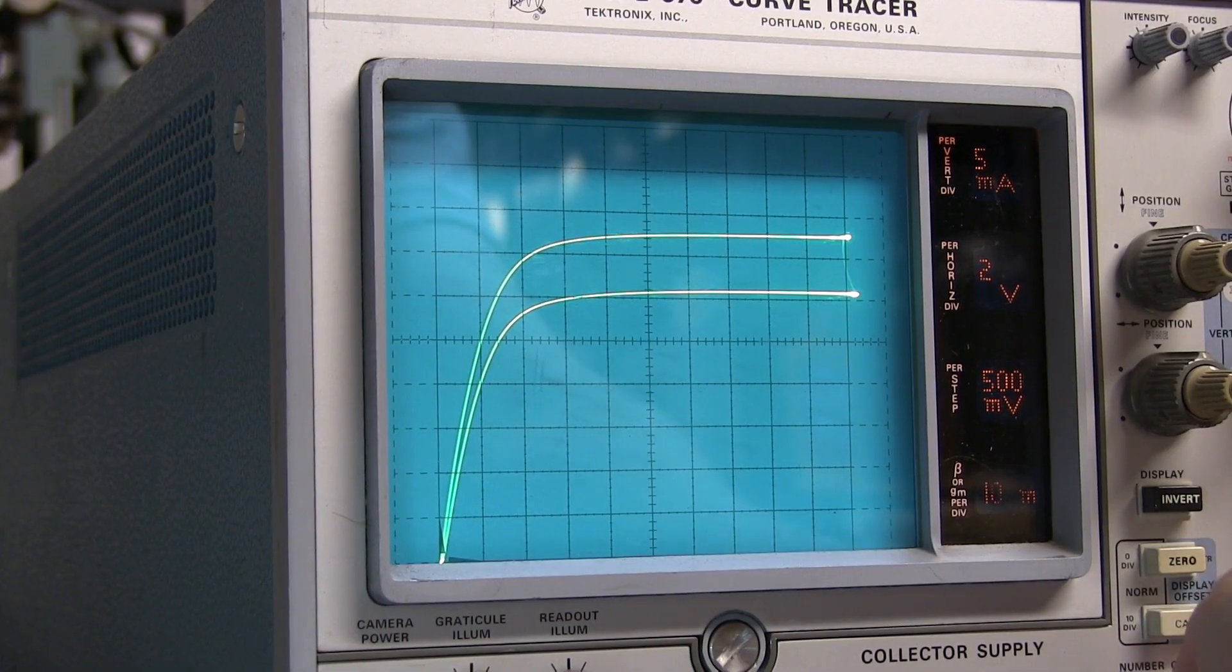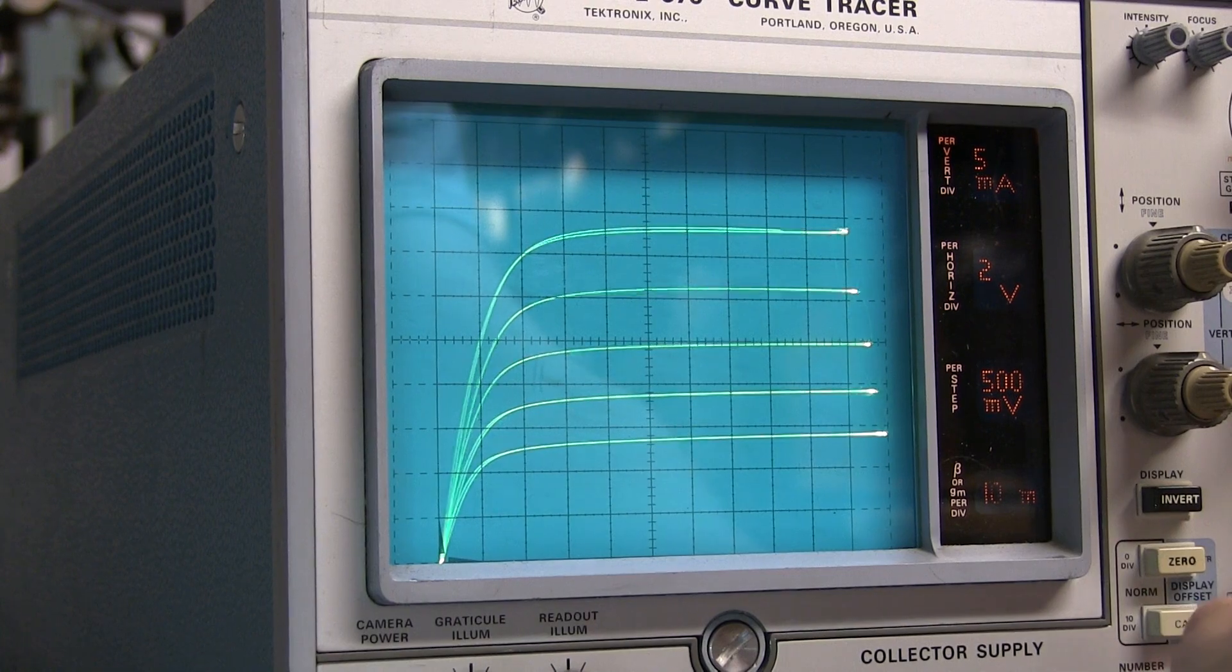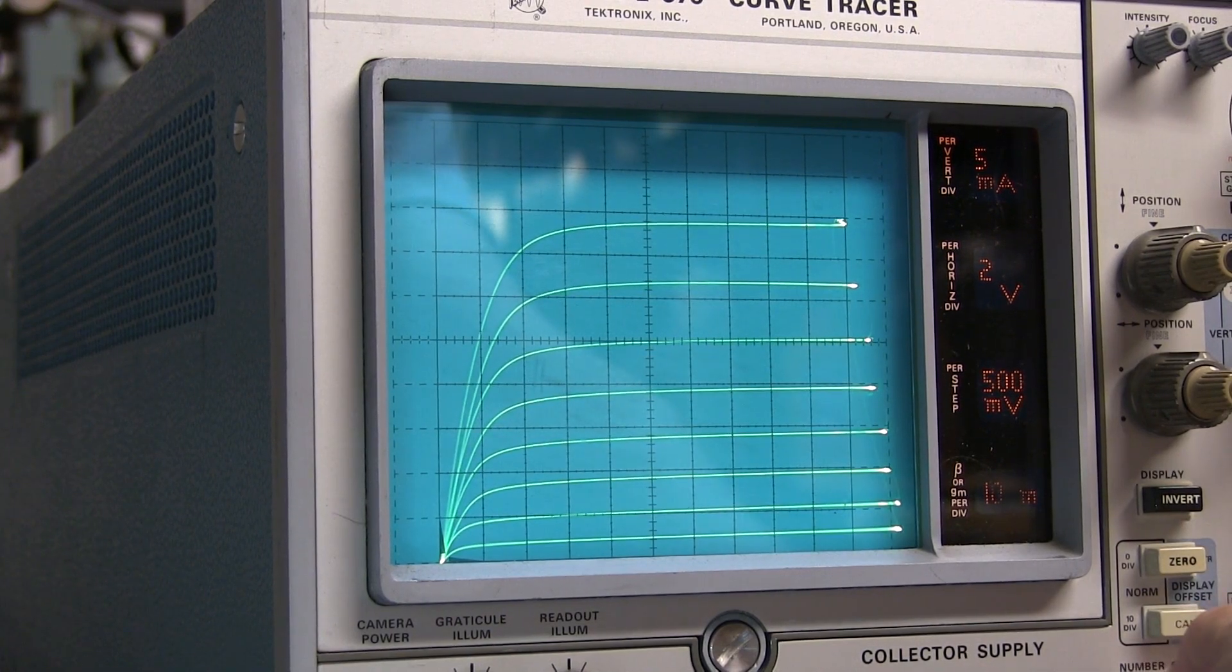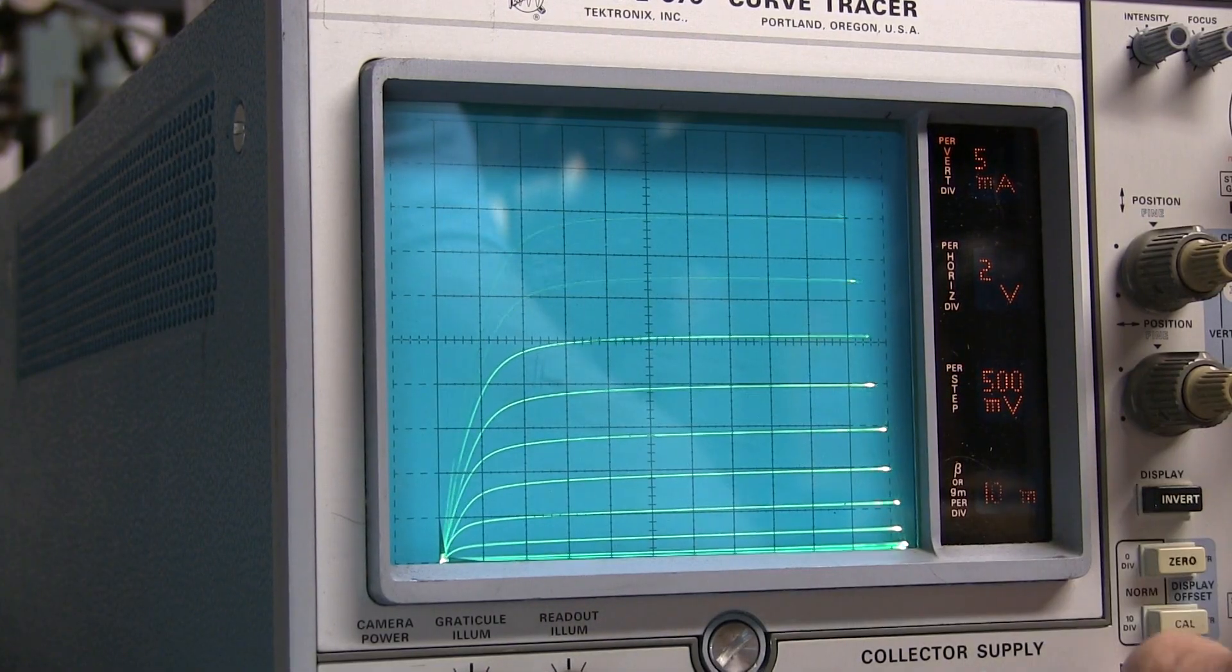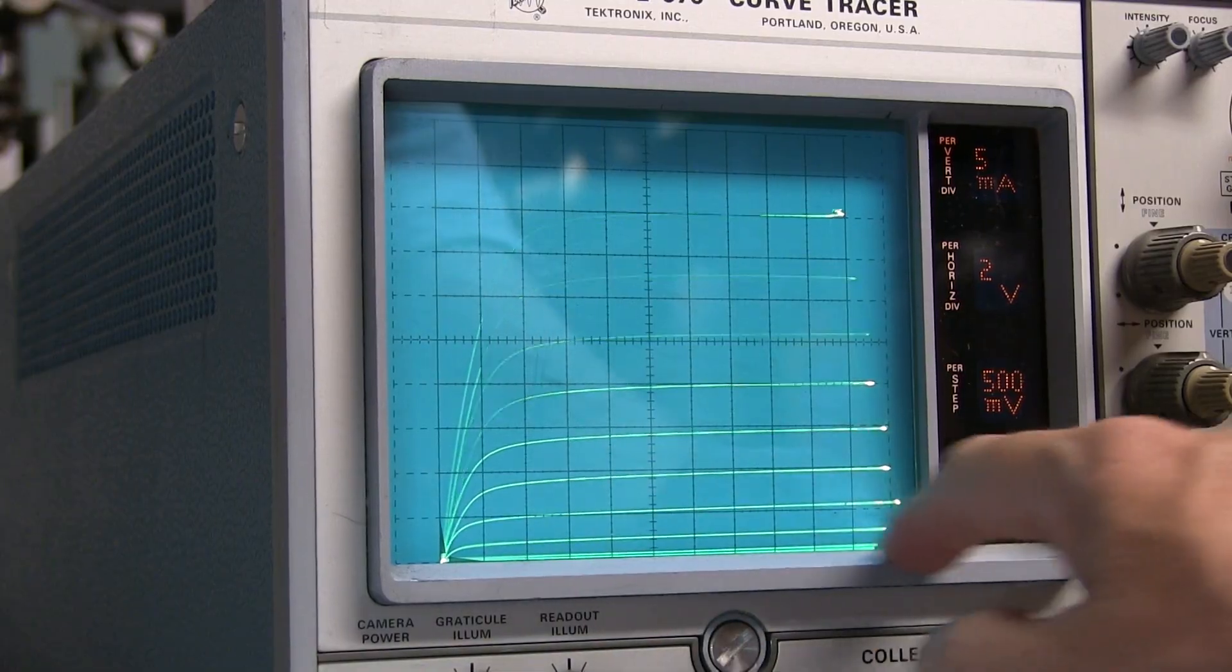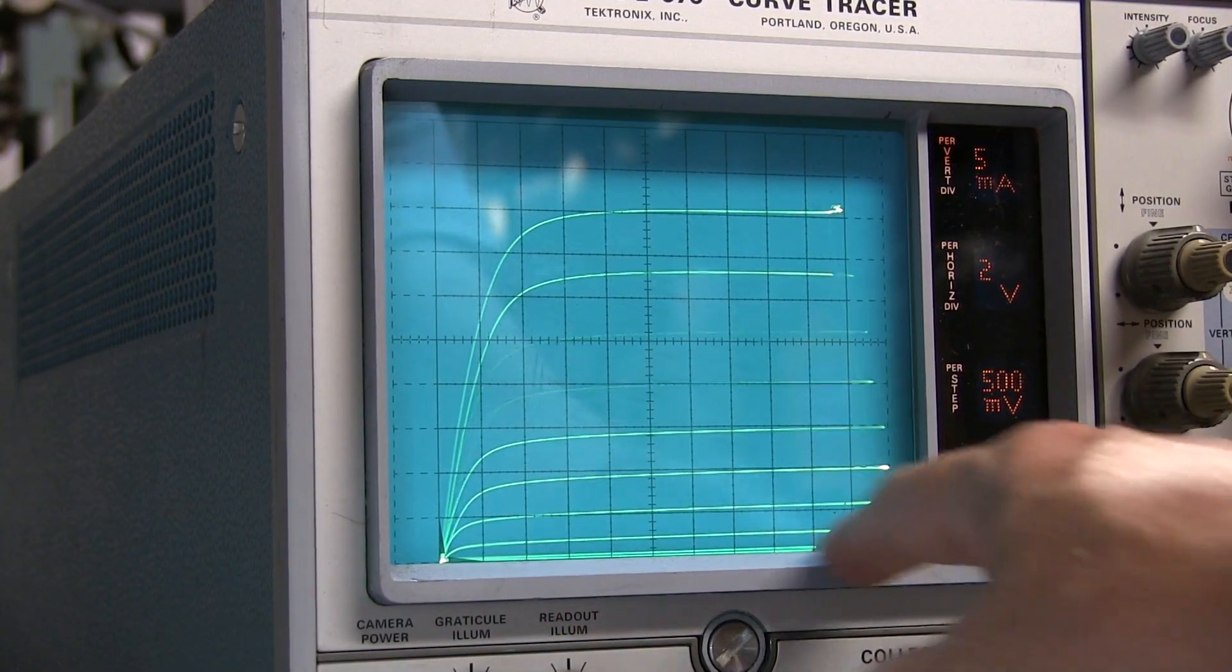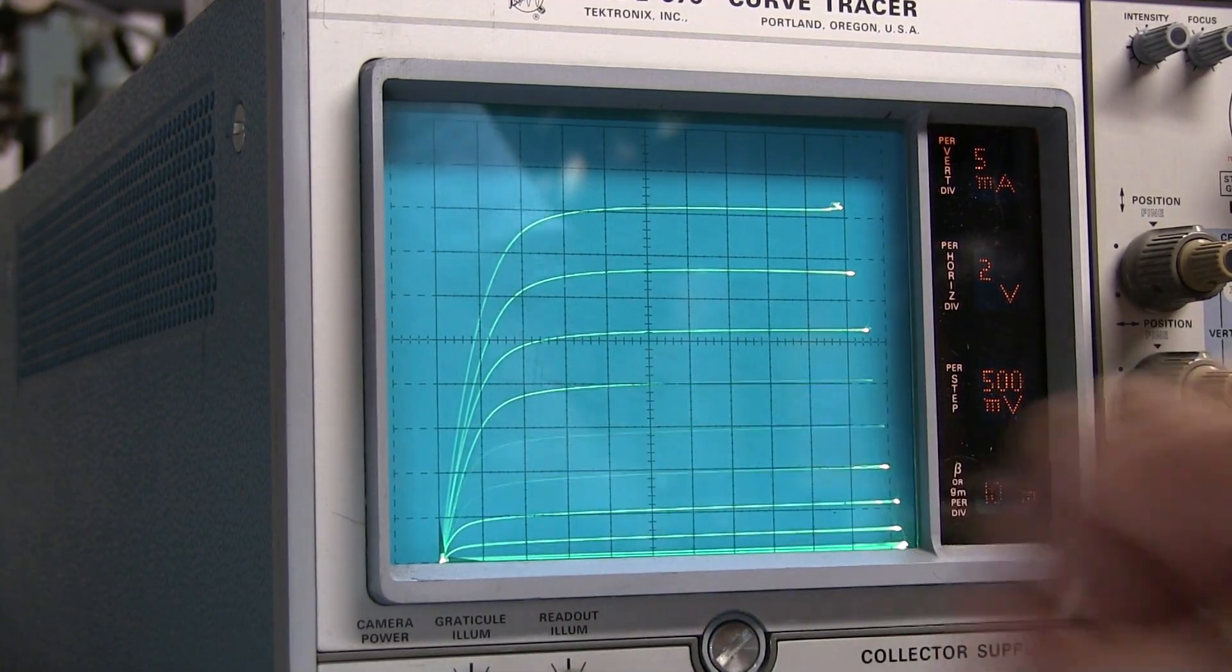As we add steps here, we go from minus 0.5 to minus 1, minus 1.5, minus 2, minus 2.5, minus 3, minus 3.5, minus 4. We're just about pinched off, and at minus 4.5 volts we're essentially along the bottom of the trace here, bottom of the display. So that means that the pinch off voltage for this particular JFET is about minus 4.5 volts.